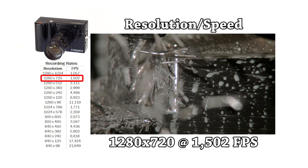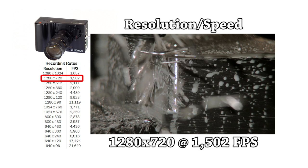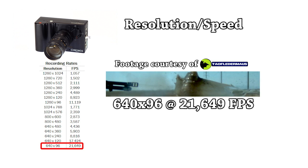Some examples include 720p at 1,500 frames per second, 640 by 360 at 5,900 frames per second, and 640 by 96 at 21,600 frames per second.